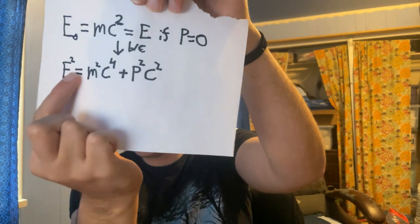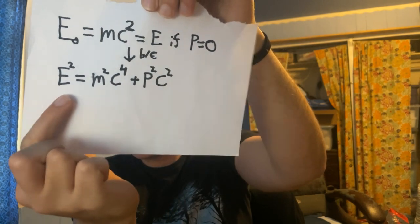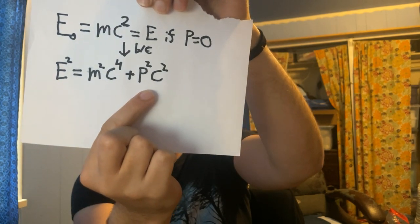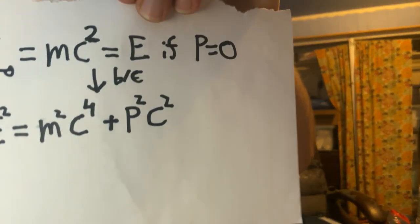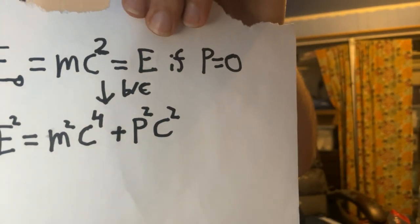She was right though — there's only one mass, and this is what's true: E²=m²c⁴+p²c². If you remember nothing else, remember that E=mc² is only true if P=zero. What's really true? This equation.